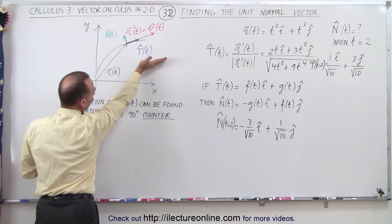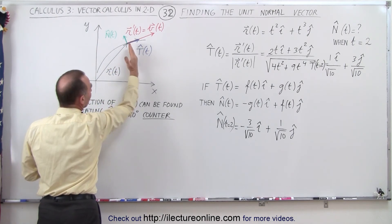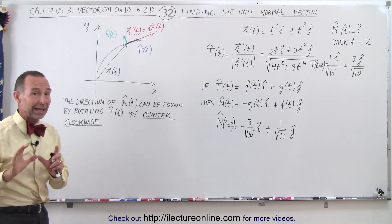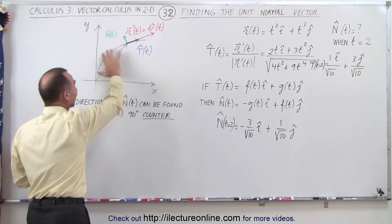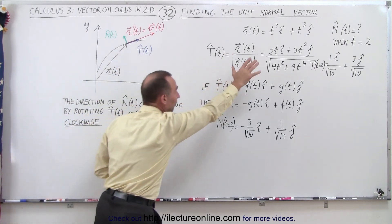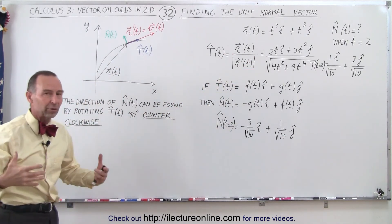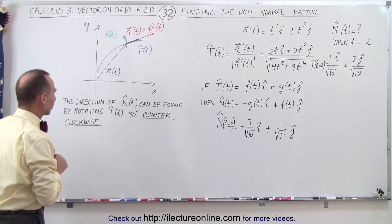So in this case, since the tangent vector is pointing this way, we rotate 90 degrees to find the direction of the unit normal vector. Again, cautioning that this is not necessarily a representation of what's there. This is just a general functional form so you can see how this works.